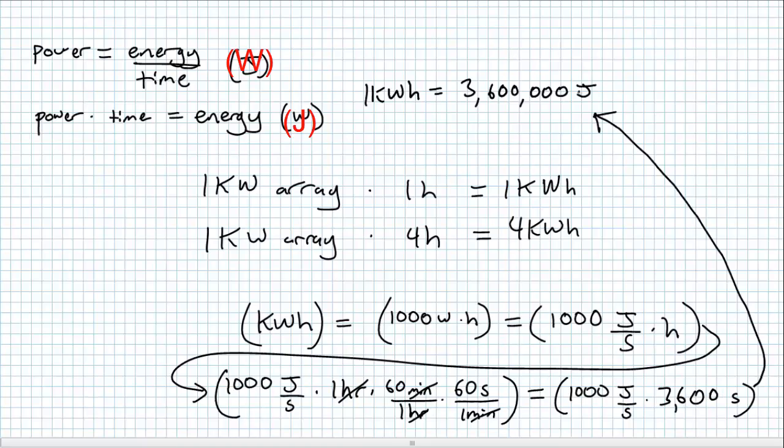The punchline of this conversion is that one kilowatt hour in effect equals 3,600,000 joules, or more appropriately, 3.6 megajoules.